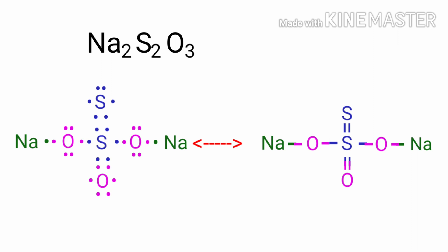As per the octet rule, sulfur needs two electrons and oxygen needs two electrons to get stability. So to get stability, the above sulfur atom can bond its two electrons with the other sulfur atom. The two oxygen atoms can bond with sodium and sulfur atoms to get octet, and the other oxygen atom bonds with the middle sulfur atom to get octet.